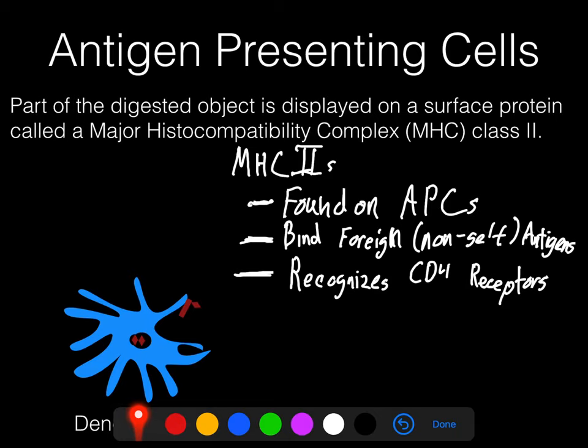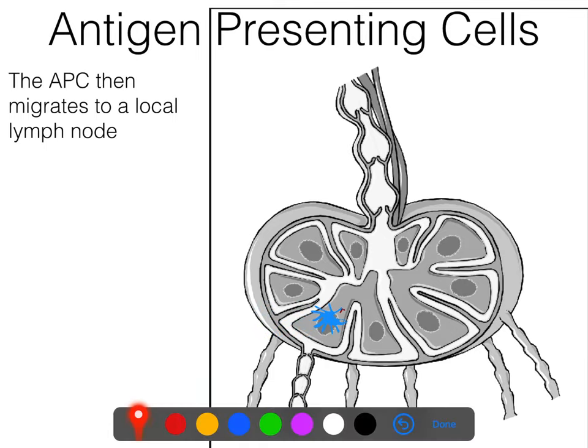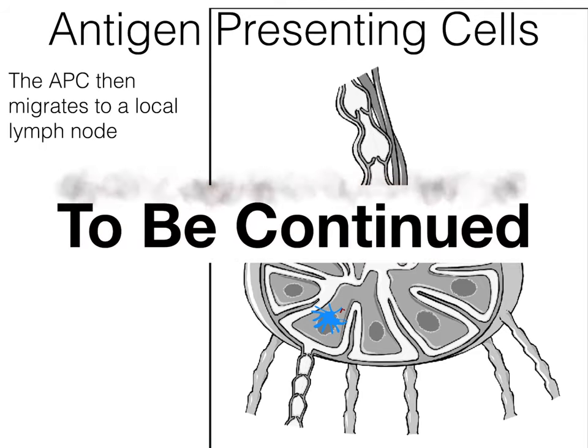Specifically, it needs to present this to helper T cells. So it's going to go to a place where you can find lots of helper T cells. Once a dendritic cell has phagocytized something and is displaying an antigen, it's going to go to the local lymph node — or any lymphatic organ where lots of this happens, like the spleen or the thymus, but lymph nodes are located all over the body so the closest one is probably a lymph node. The antigen-presenting cell is now going to hang out inside a lymph node, and we'll leave its story here and come back to it later.